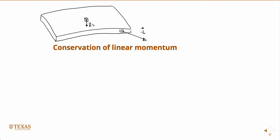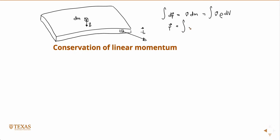Linear momentum is mass times velocity. So if our little cube here has a little differential mass dm — because it's a little infinitesimal cube — then a little differential momentum vector would be equal to the velocity times dm. And dm can be written as the density times the volume, since the mass of anything is density times volume. So if we wanted to figure out the total momentum in the whole body, we could integrate over the body: the total momentum is equal to the integral of v·rho dV.